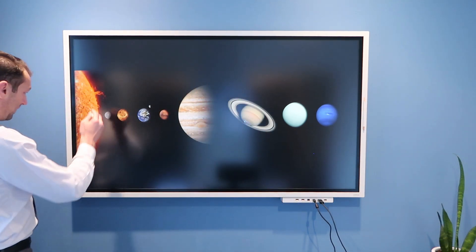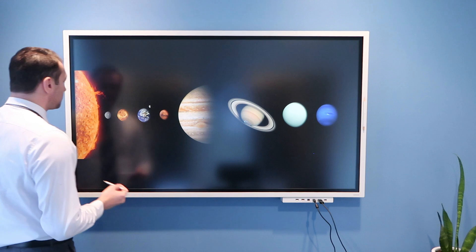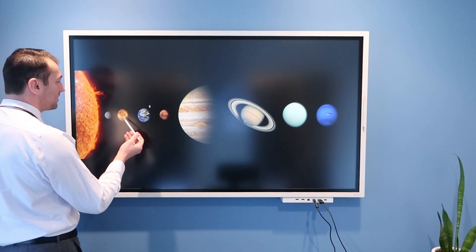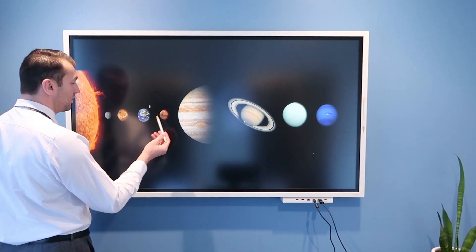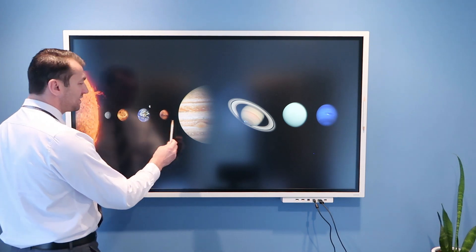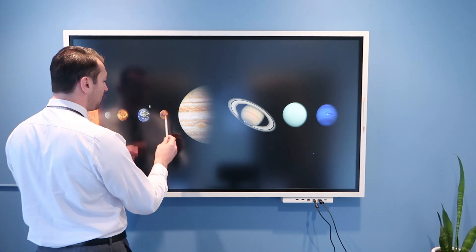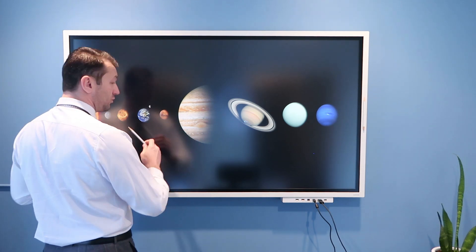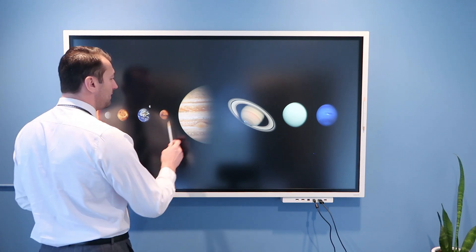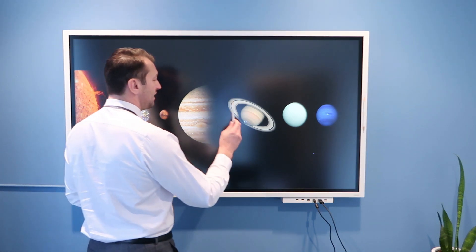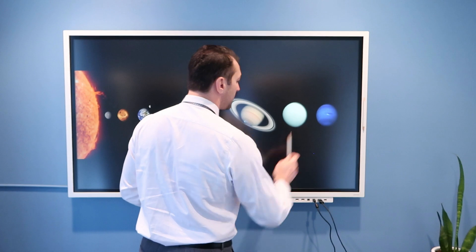The center of our solar system is the Sun, and then we have planets starting from Mercury, Venus, Earth with our little moon, Mars, and then there is a wide asteroid belt between Mars and Jupiter. Then Jupiter, Saturn, Uranus, and Neptune.